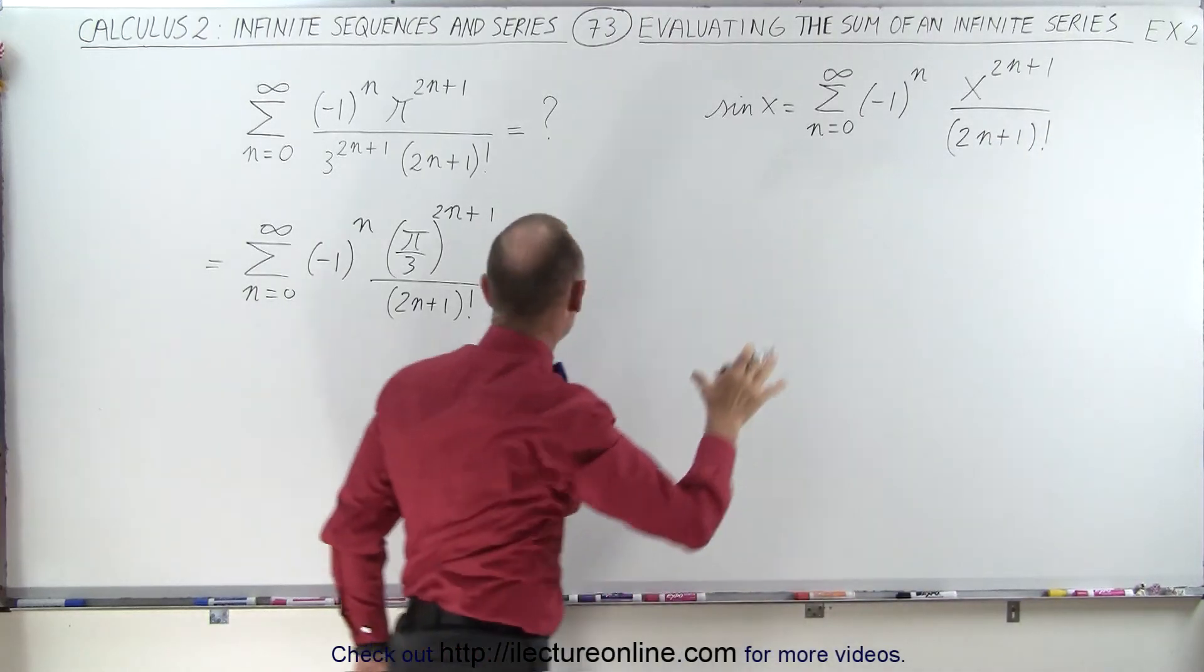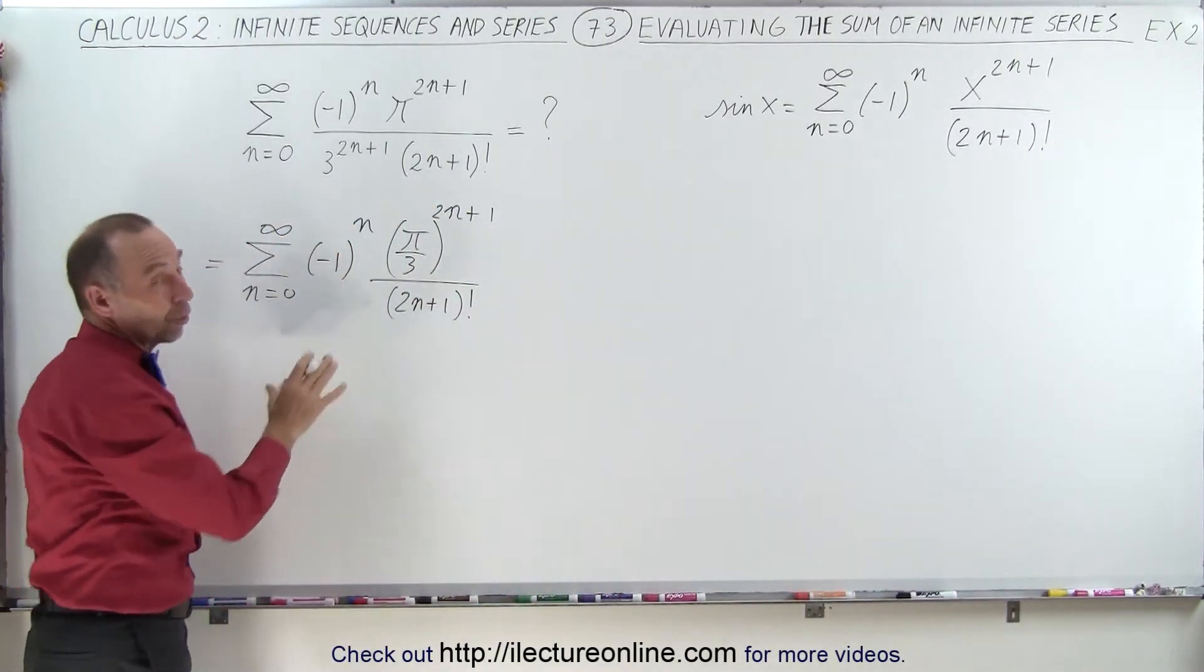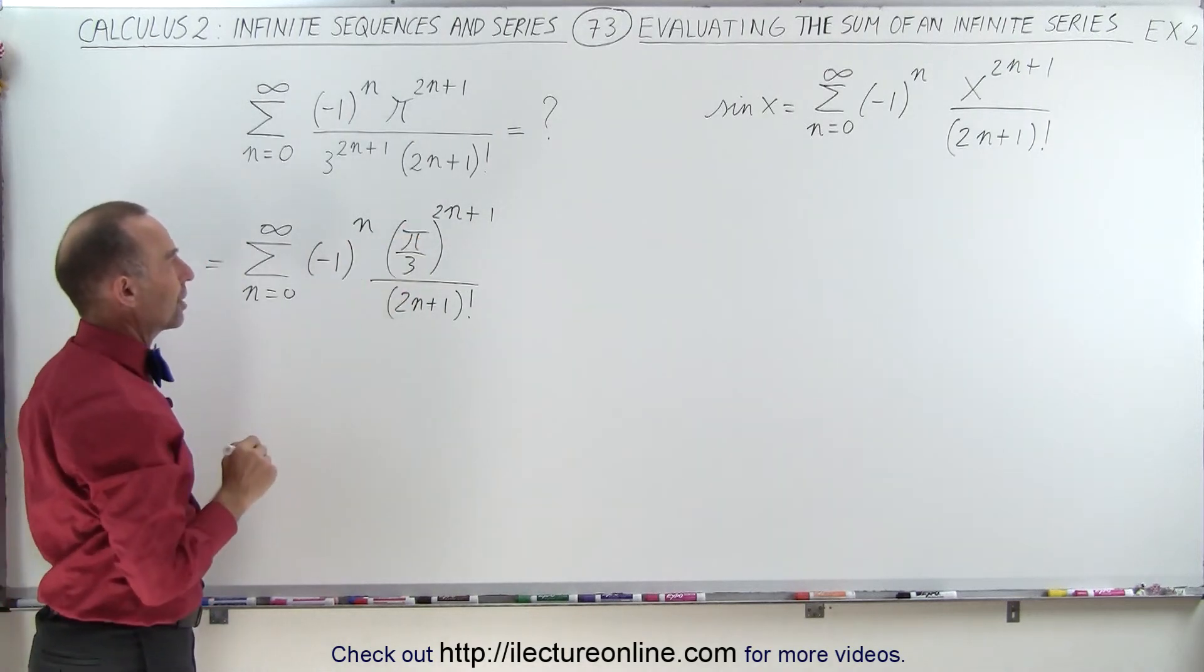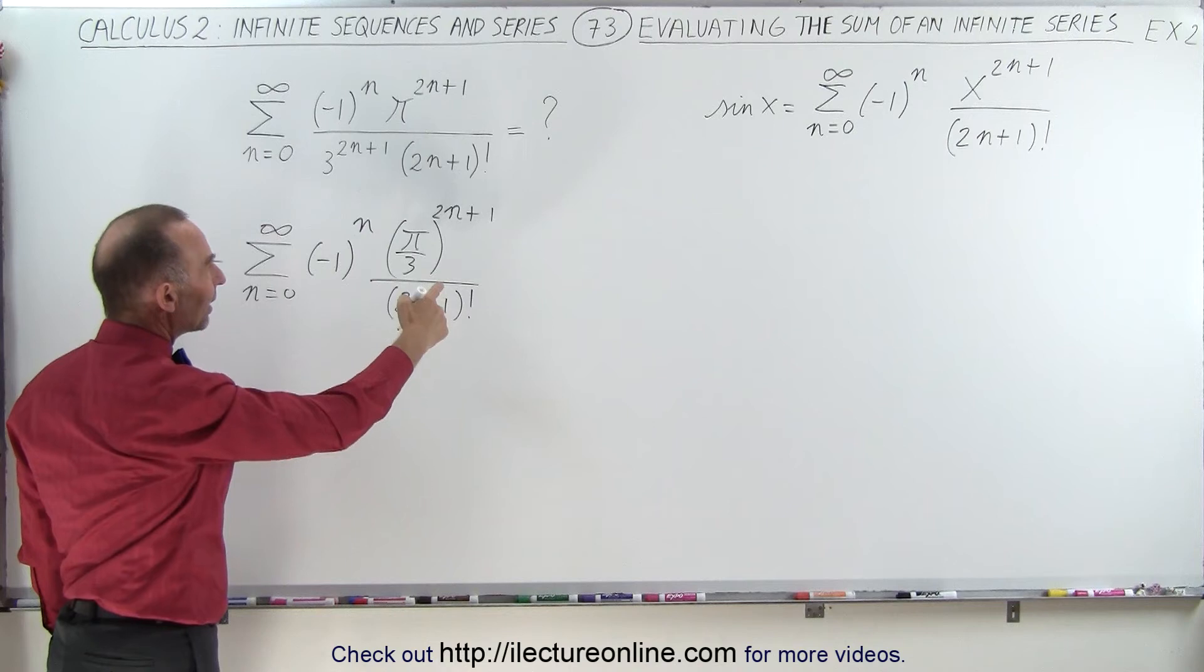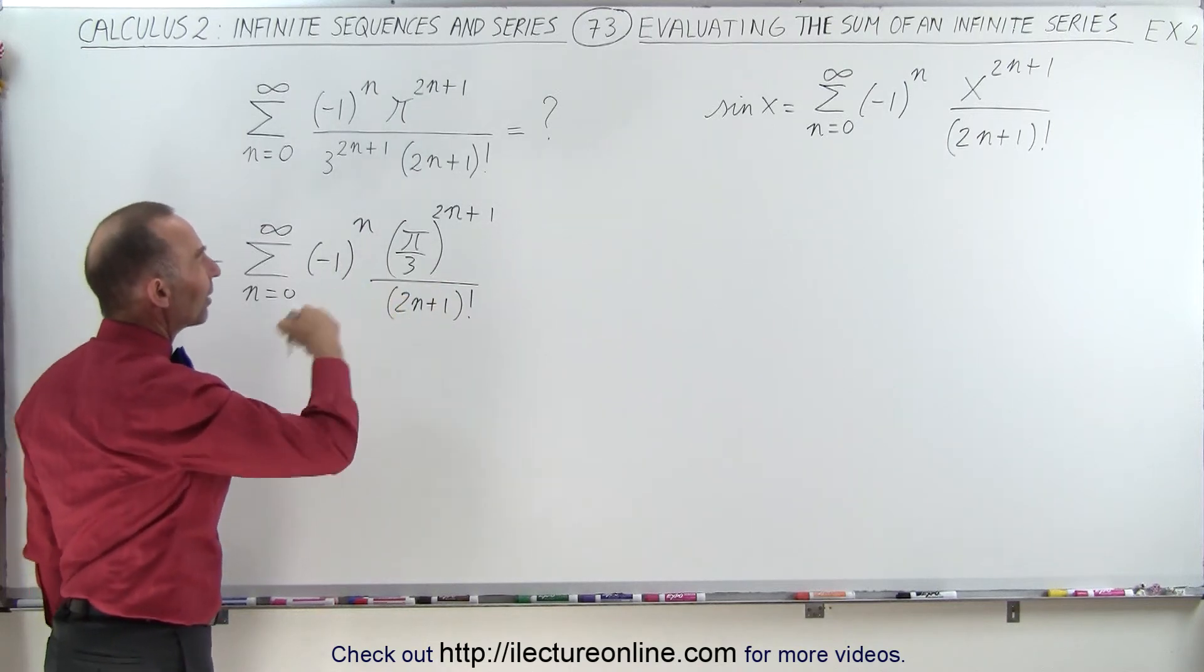And when you compare this to what we have over here, notice instead of an x, we have a pi over 3, which means that this is equal to the sine, instead of x, the sine of pi over 3.